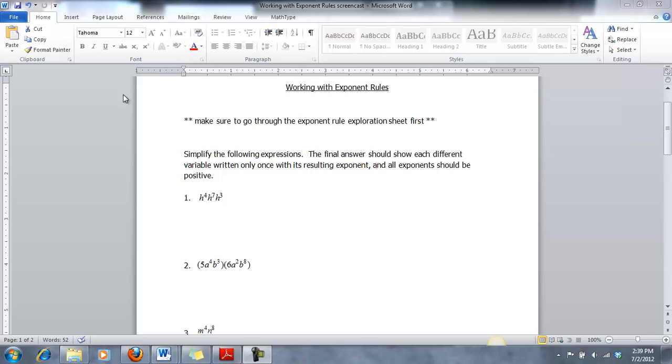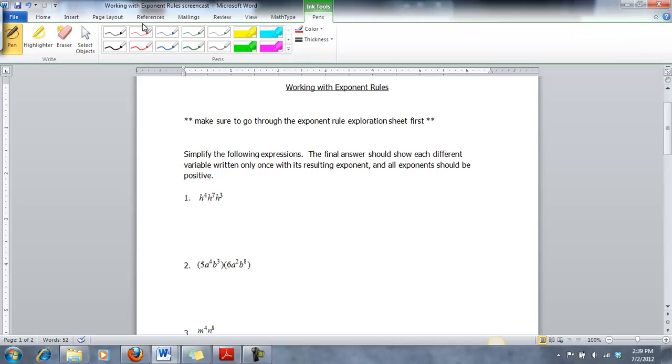Alright, today we're going to be working on some properties of exponents that you guys should have worked on as well, just to review some of those. You can always look in your book too if you want a list of those handy. Problem number one is h to the fourth times h to the seventh times h to the third. Make sure we read the directions. The final answer should show each different variable written only once with the resulting exponent and all exponents should be positive.